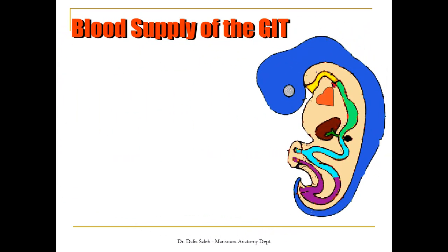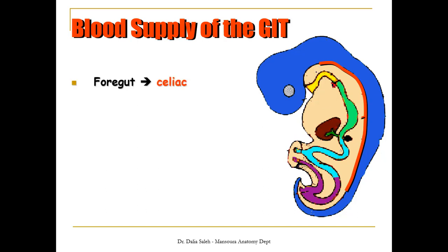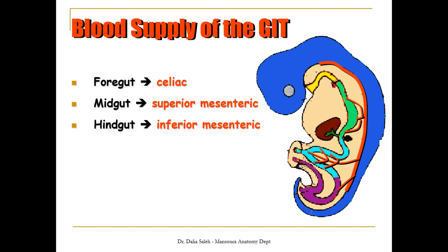At the same time, the heart is formed and its big vessel, the aorta, is formed as well. Three branches come out of the dorsal aorta to supply the gut tube. The foregut is supplied by a branch called the celiac trunk, which later divides into three branches: the left gastric, the hepatic, and the splenic. The midgut is supplied by a single branch called the superior mesenteric artery, and the hindgut is supplied by another single branch called the inferior mesenteric artery.